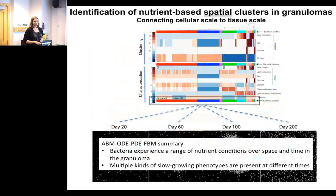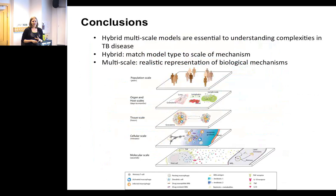In summary, there's a range of nutrient conditions over space and time, with major changes happening over time, and there can be multiple kinds of slow-growing bacteria. We need hybrid and multi-scale models to capture biological systems that happen at different scales. It needs to be hybrid so you can match the model type to the questions you want to ask; it needs to be multi-scale because biology is multi-scale. I'd like to thank my lab members and our collaborators at Johns Hopkins who did a lot of the flux balance modeling. Happy to take questions.